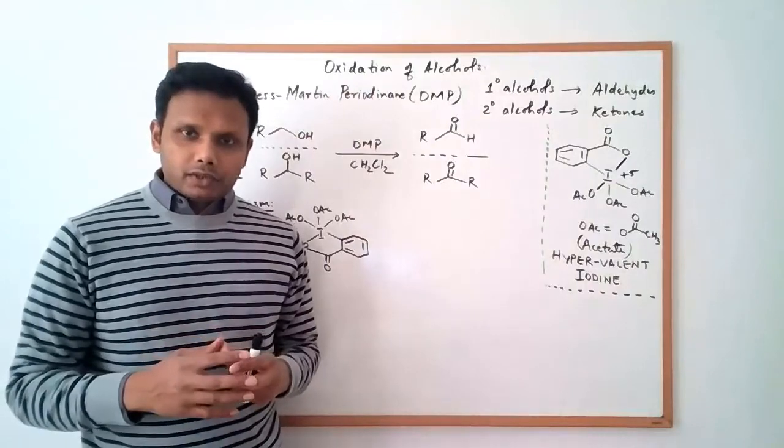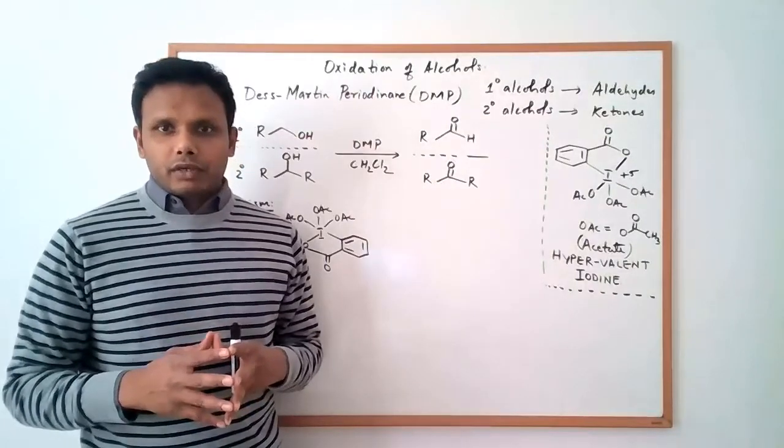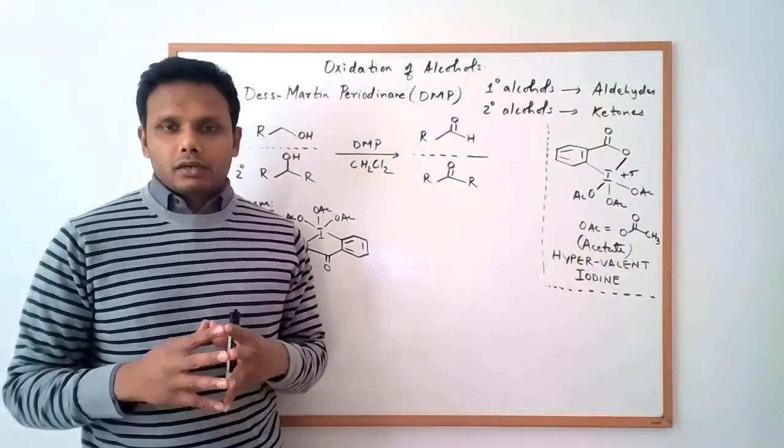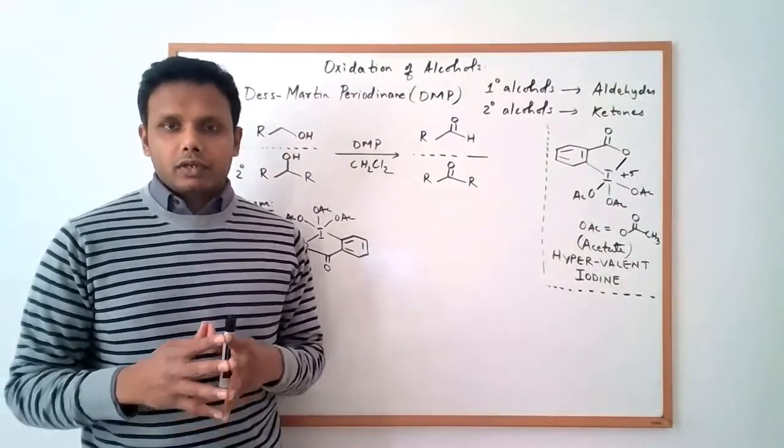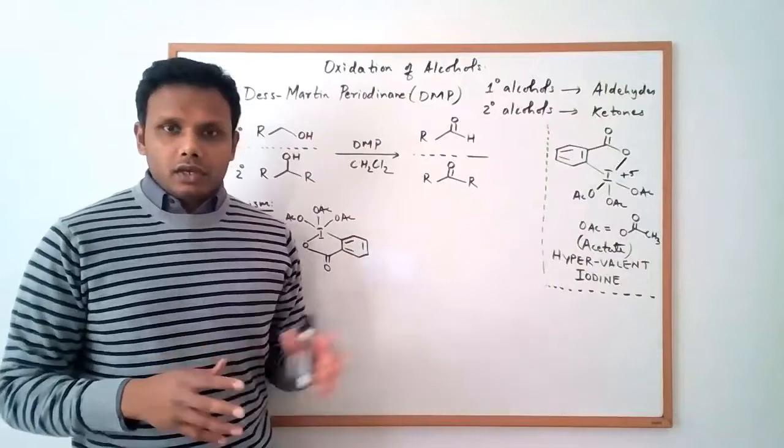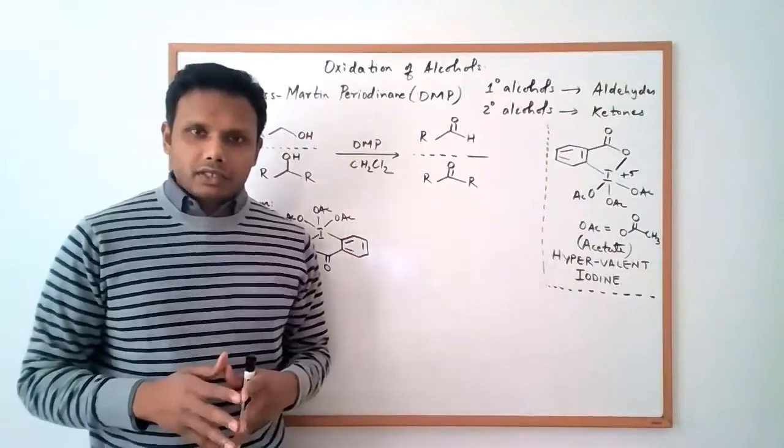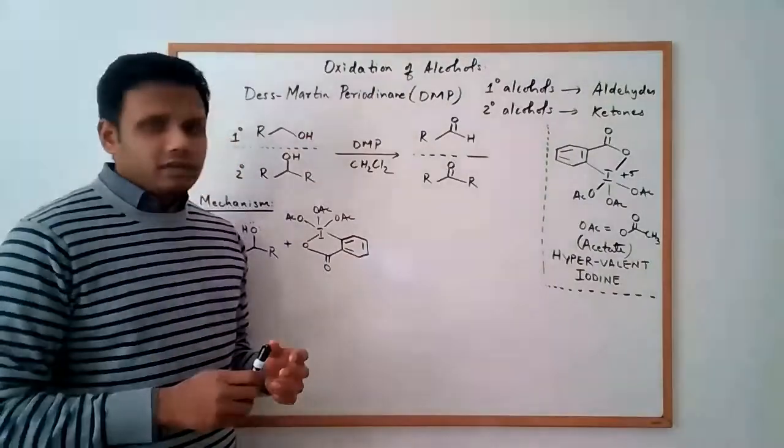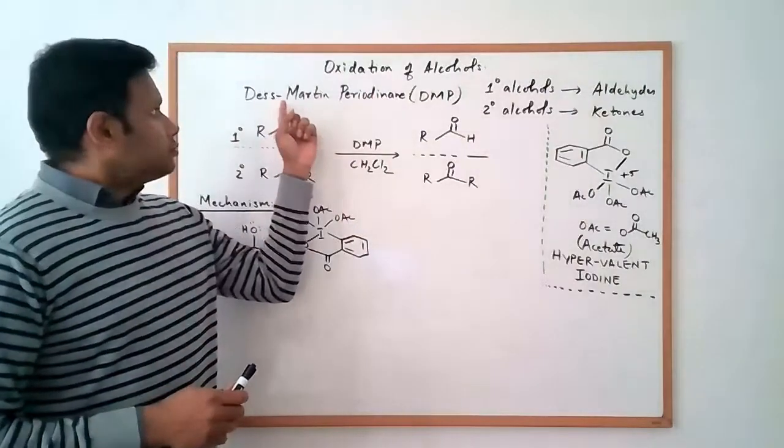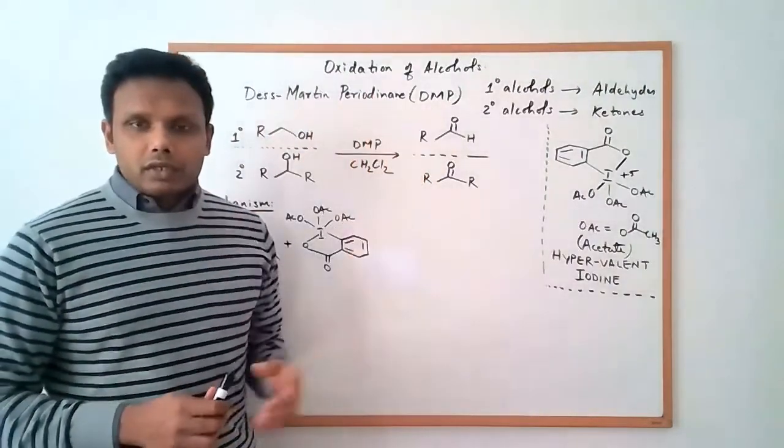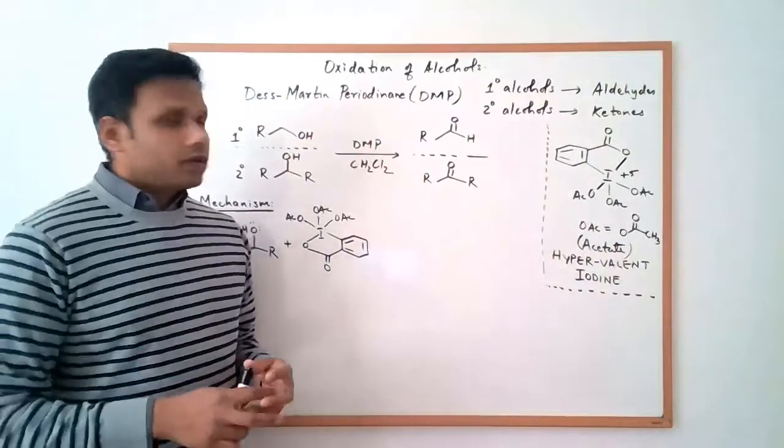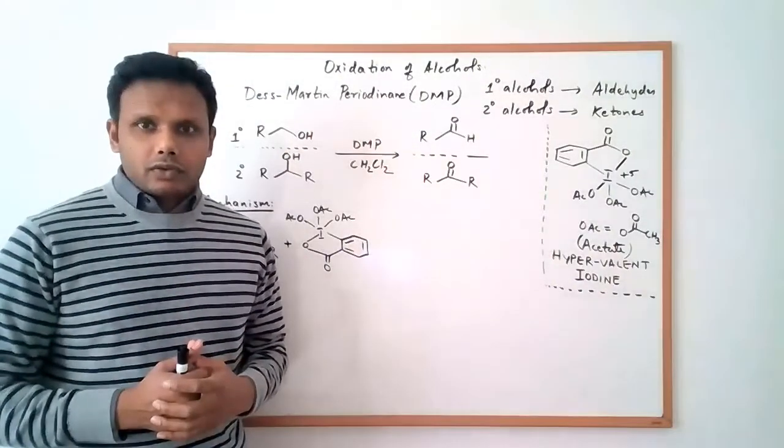We previously talked about the use of chromic acid reagent and Swern oxidation for achieving alcohol oxidation. This is the final video in this series where we're going to use DMP, Desmartin periodinane, which is commonly known as DMP, for achieving the oxidation of alcohols.